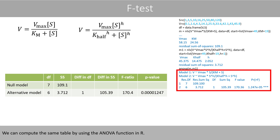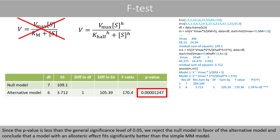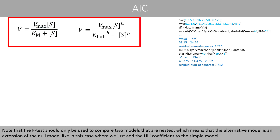We can compute the same table by using the function ANOVA in R. Since the p-value is less than the general significance level of 0.05, we reject the null model in favor of the alternative model, and conclude that the model with an allosteric effect fits significantly better than the simple Michaelis-Menten model. Note that the F-test should only be used to compare two models that are nested, which means that the alternative model is an extension of the null model, like in this case where we just add the Hill coefficient to the simple model.